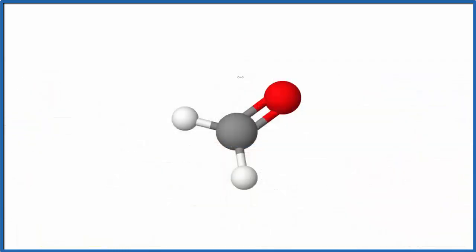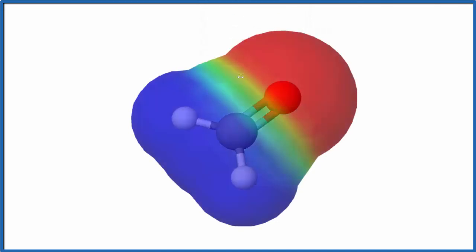So here's our formaldehyde. We have our carbon, our two hydrogens, and our oxygen. If we look at the surface of the molecule, we'll see that this red area is more negative, the blue is more positive.